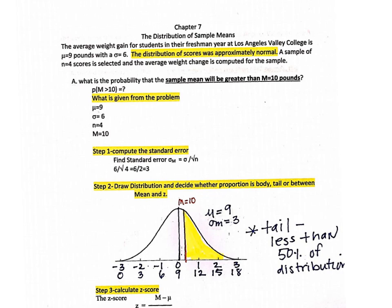The standard error is the standard deviation divided by the square root of n. The population standard deviation is 6, and the sample size is 4, so we take the square root of 4, which gives us 2 in the denominator. So we have 6 divided by 2, which equals 3.